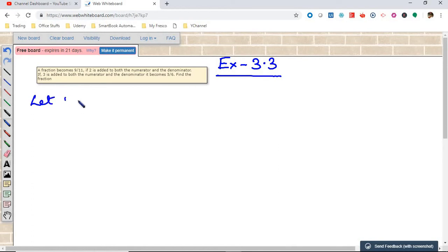So let the numerator, the unknown number, be the numerator and denominator. Let the numerator be x and let the denominator be y. So the fraction becomes x by y.